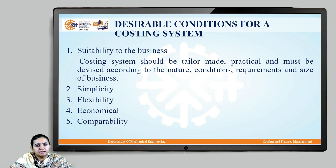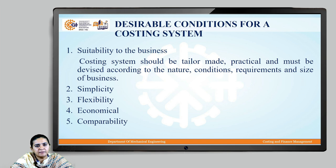Let us see the desirable conditions for a costing system. The first is suitability to the business — the costing system must be tailor-made, practical, and devised according to the volume, nature, requirements, and size of the particular business. The second is simplicity: the costing system should be very simple so it can be easily used by anybody. The third is flexibility: the costing system should be flexible enough to accommodate changes with the changing environment.